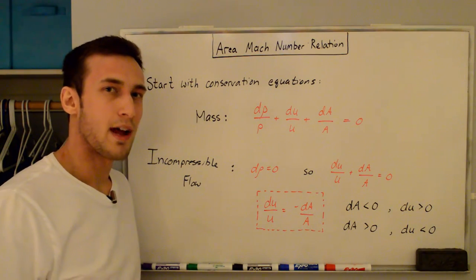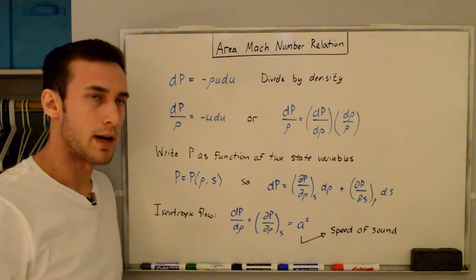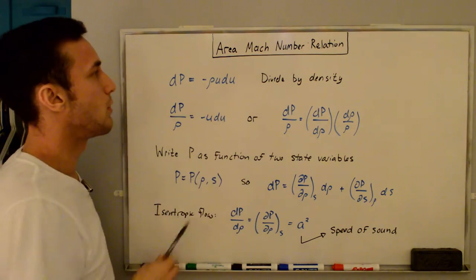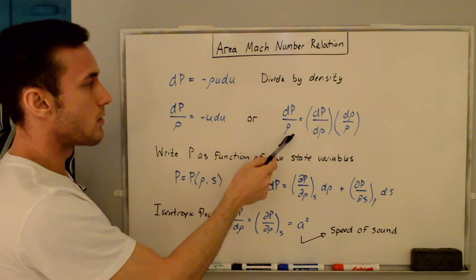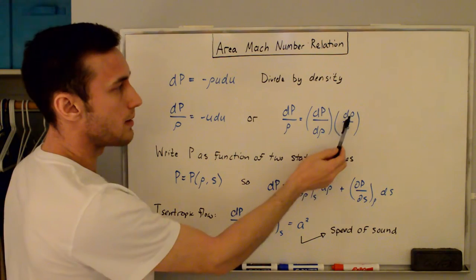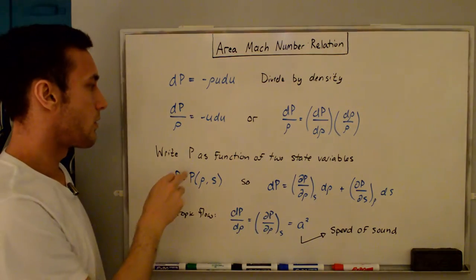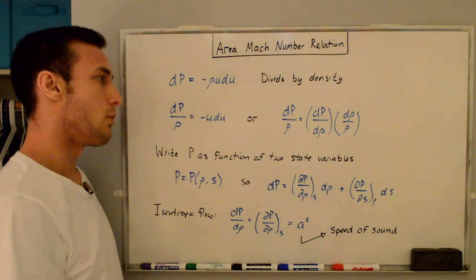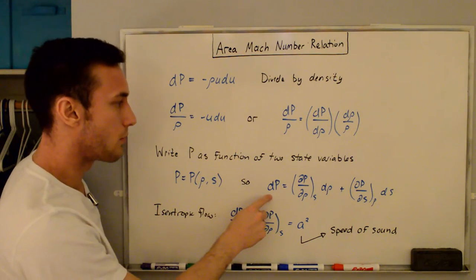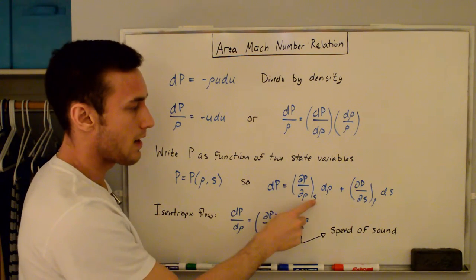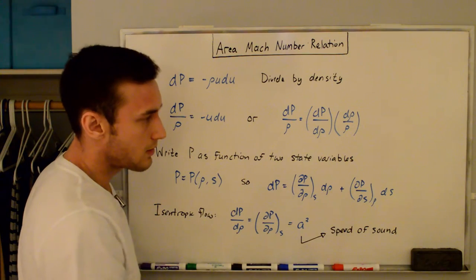However, we get a counterintuitive answer when we allow the density to change in our flow. To include the effects of changing density, we need to include the momentum equation in our analysis. Dividing both sides by density gives us dP/ρ = −u·du. We can also write dP/ρ as (dP/dρ)·(dρ/ρ). We want to write pressure as a function of two state variables — density and entropy — so the differential of pressure is the partial derivative of P with respect to density at constant entropy times dρ, plus the change in pressure with entropy at constant density times dS.